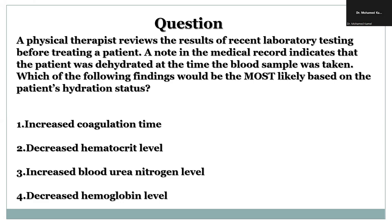In summary: coagulation time is not affected by hydration status; hematocrit level and hemoglobin will be increased in case of dehydration; and blood urea nitrogen level will also be increased in case of dehydration — making increased blood urea nitrogen the correct answer. Thanks so much and see you in another question soon.